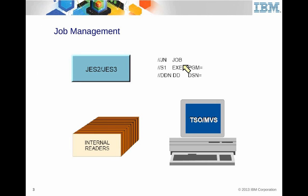We talked about JCL — the Job Statements, Execute Statement, and DD Statements. Inside the operating system we have things called internal readers, and an internal reader can actually read JCL statements. Prior to internal readers, there used to be Hollerith punch cards, and people used to have card decks and read them in. But with internal readers, it can just be a group of statements in a dataset that gets submitted or started.